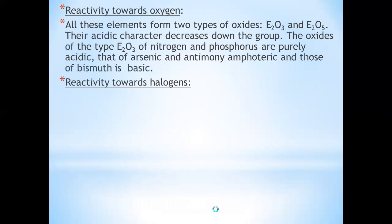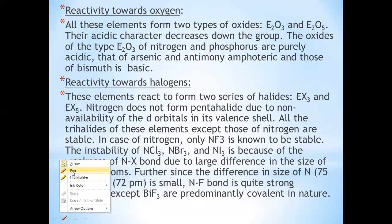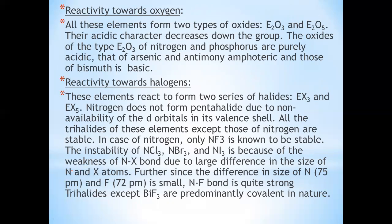All elements of group 15 — nitrogen, phosphorus, arsenic, antimony, bismuth — form hydrides with hydrogen of type EH3. Nitrogen forms ammonia (NH3), phosphorus forms PH3, arsenic forms AsH3, antimony forms SbH3, and bismuth forms BiH3.